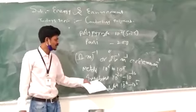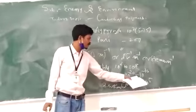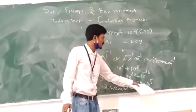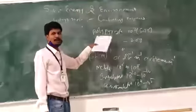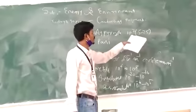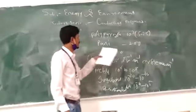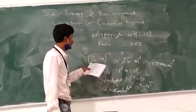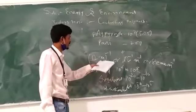For insulators, conductivity ranges from 10^-20 to 10^-8. Semiconductors have conductivity from 10^-8 to 10^5. Polymers like polyaniline have conductivity around 10^2 to 10^5. These are the conductivity ranges used for different conducting materials.